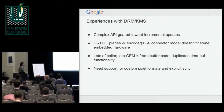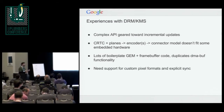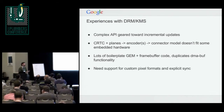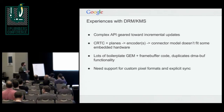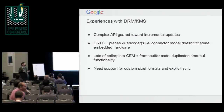We also found that the DRM object model — where you have CRTCs, possibly some extra planes attached to them that drive one or more encoders, and each encoder drives exactly one connector — doesn't always fit embedded hardware. In particular, the hardware we were looking at had a requirement that if you wanted to drive a high-resolution display, you needed to gang together multiple CRTCs, and there was just no way within the DRM object model to represent that.